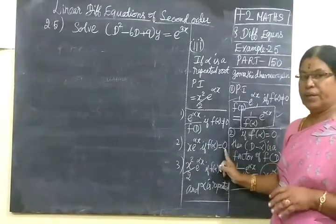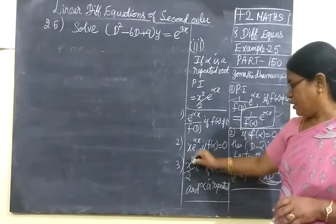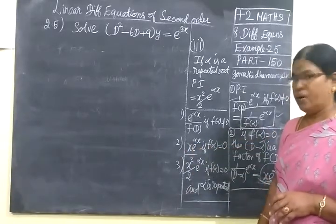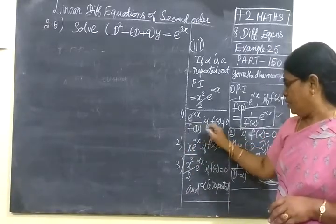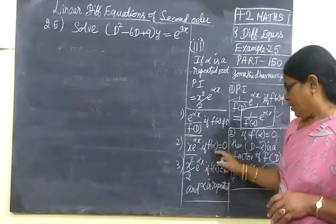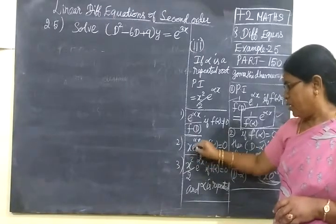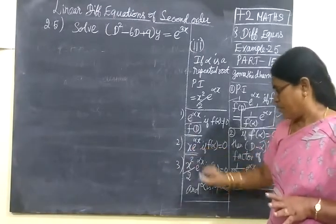That is denominator is equal to 0, means particular integral is x into e^(αx). This is the way we are substituting alpha value and write the answer. Here denominator 0 means you are writing x into e^(αx). That's all the answer.